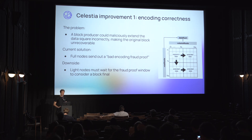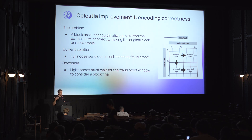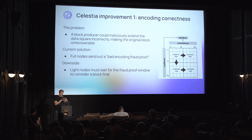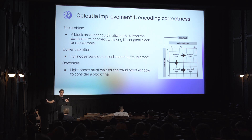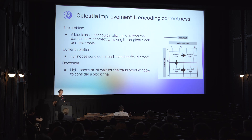The first improvement I think would be very interesting is proving the correctness of the encoding of the Celestia block data. Currently, a block producer constructs the extended block, but they could do it in a malicious way that doesn't follow proper encoding — meaning you couldn't actually reconstruct the block if you wanted to. To solve this we have what we call a bad encoding fraud proof: if a full node sees this happening, it generates a fraud proof and circulates it to light nodes so they know not to trust that block. The downside is that you have the same sort of latency as an optimistic rollup — you have to wait for the fraud proof window to elapse before you can consider a block final.